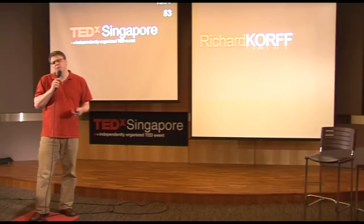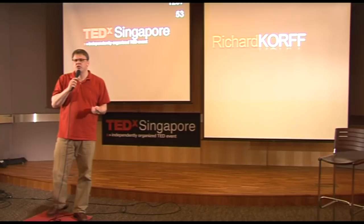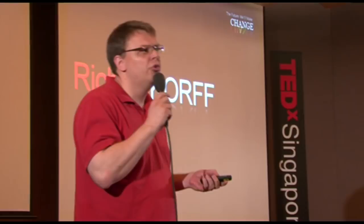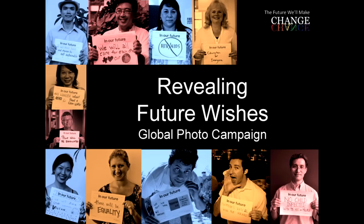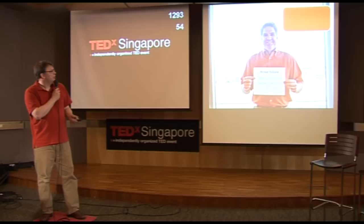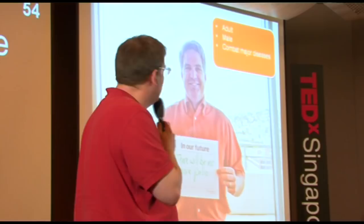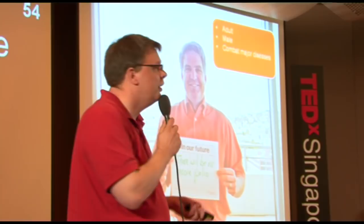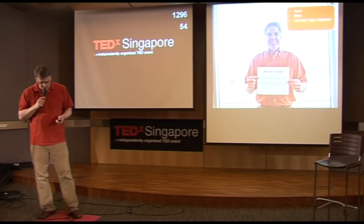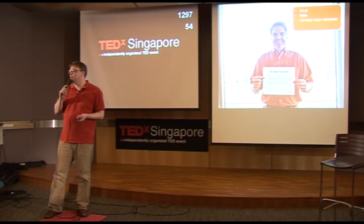Some of you may ask, what kind of data can you get from a picture? Well, you can take when it was taken and what camera they used, but we're not really interested in that in this case. What we would like to look at is what kind of MDGs people would choose. As an example, here we've got a middle-aged man — he's an adult, male — and his sign says 'combat major diseases.' He wants to eradicate polio.